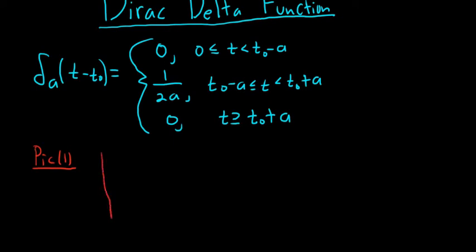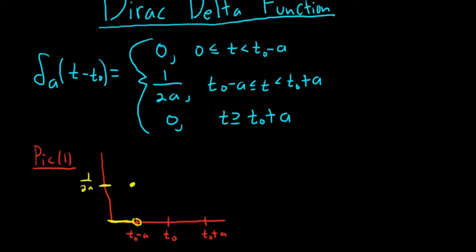Pick 1 will be the picture of this function. There's the y-axis and the x-axis. Here's t₀, here's t₀ plus a, and here's t₀ minus a. The function is 0 all the way up to t₀ minus a, then it jumps up to 1 over 2a. It's a horizontal line all the way to t₀ plus a, then it drops back down to 0.